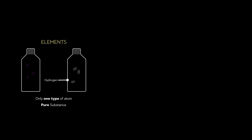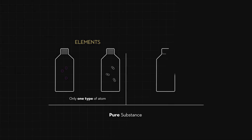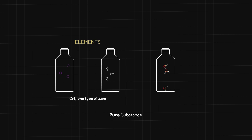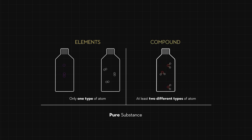So what happens when atoms of different elements combine to form new substances? Consider a container filled with triplet balls — one red and two white — representing water molecules. These molecules consist of hydrogen and oxygen atoms bonded together. This creates a compound, which is a substance made up of at least two different types of atoms, but it is still a pure substance because each molecule is the same.